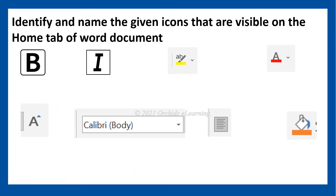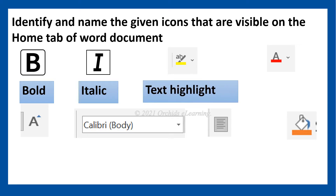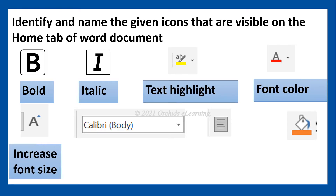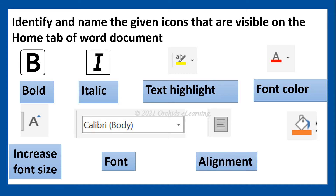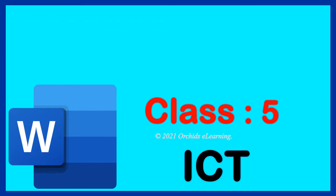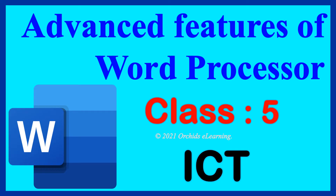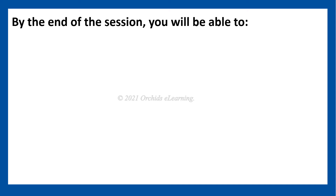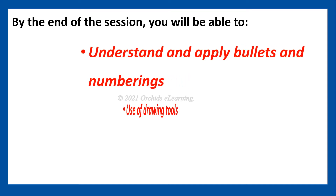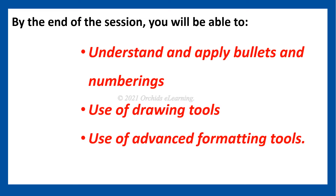Children, before starting today's session, can you identify and name the given icons that are visible on the home tab of a Word document? They are bold, italic, text font color, increase font size, font alignment, and shape fill tools. These tools are used to beautify the document, which is nothing but formatting. Today we are going to learn some advanced features of a word processor. By the end of this session, you will learn about bullets and numbering, use of drawing tools, and use of advanced formatting tools.